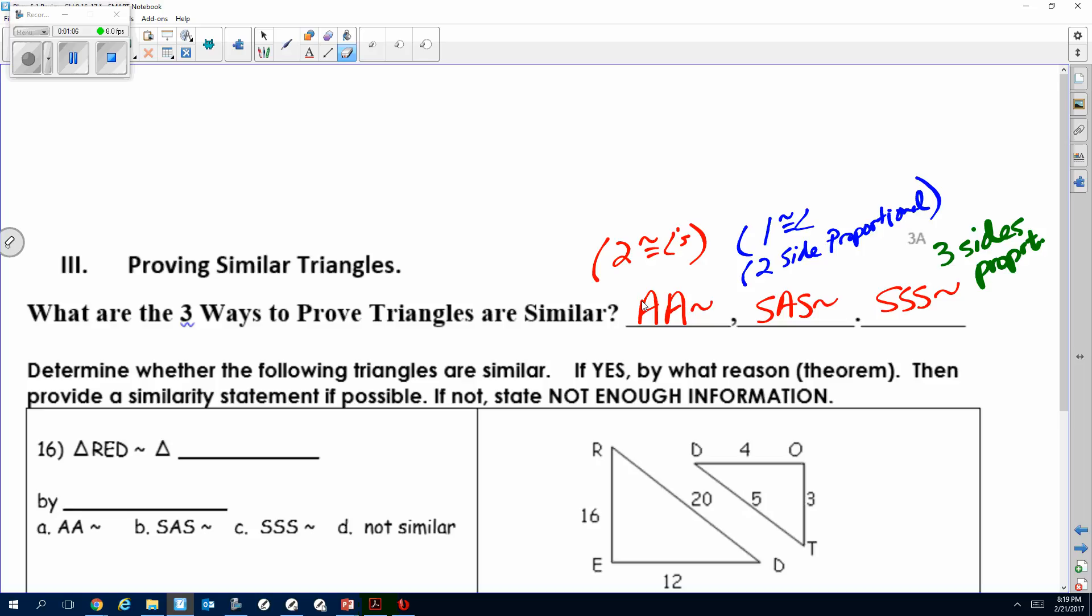Let me keep it color coded. This should be side-side-side similarity, this one here side-angle-side similarity, which means the angle has to be in between those two sides, and then angle-angle similarity. So either picking one of these three we can use, or it cannot be proven.